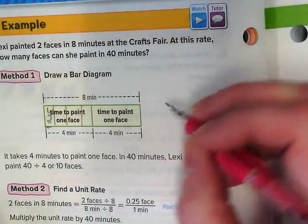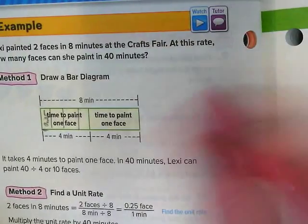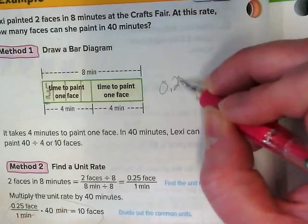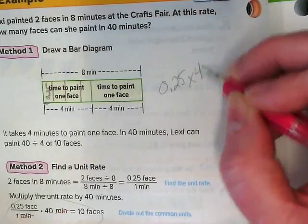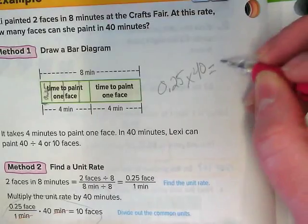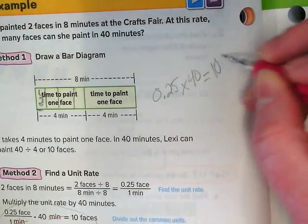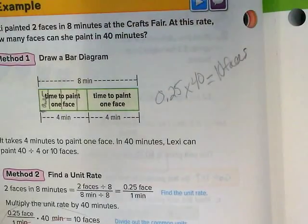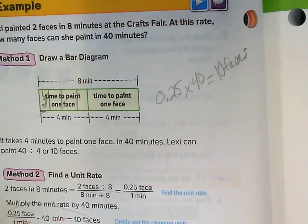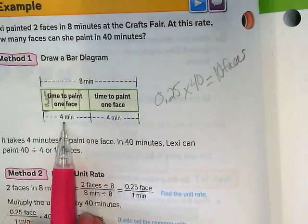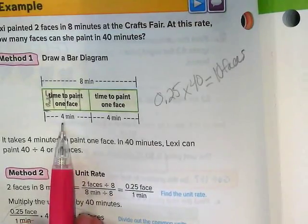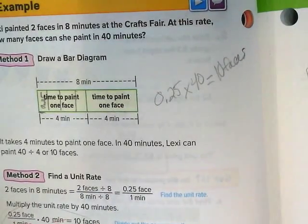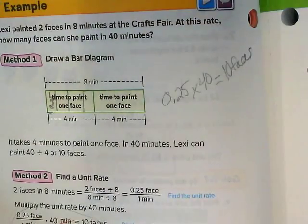So if I know that's the case, and this is showing us down here, I can just take 0.25 times 40 and we end up with 10 faces in 40 minutes. Which really does make sense because if it takes her four minutes to do each face, four times 10 would be 40, right? So that's just one more example of a real-world problem.